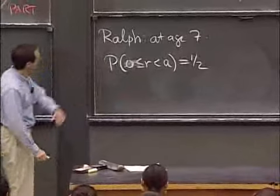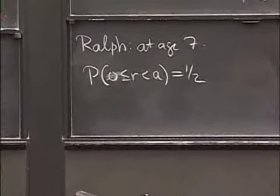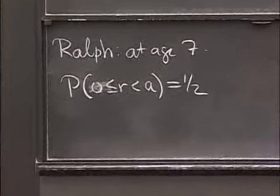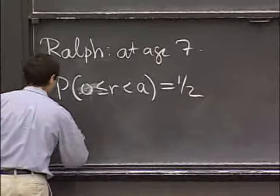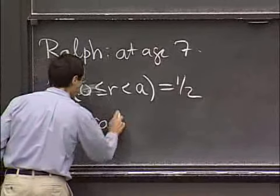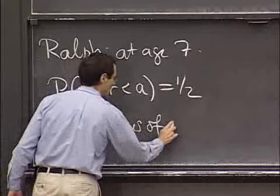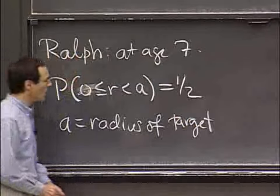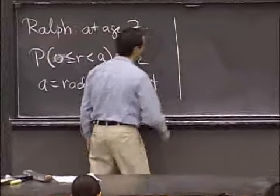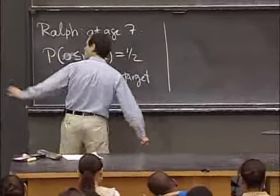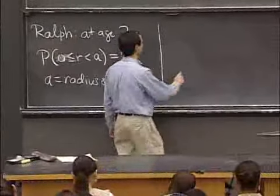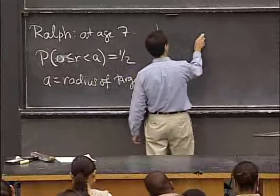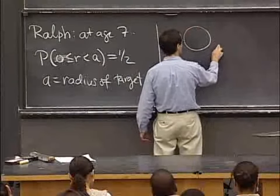All right. So now, so here's the extra assumption that I want to make. So A is going to be the radius of the target. Now, the other realistic assumption that I want to make is where this little kid would be standing. And now here I want to get very specific and just do the computation in one case.